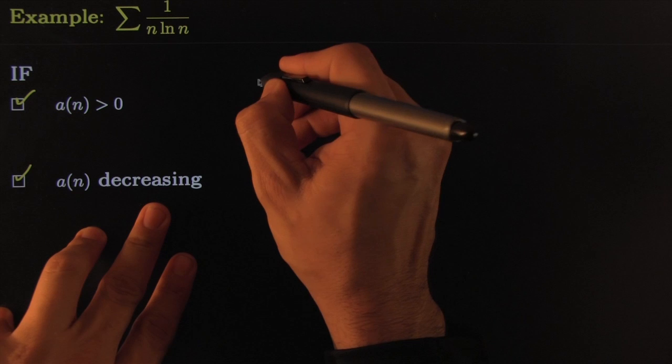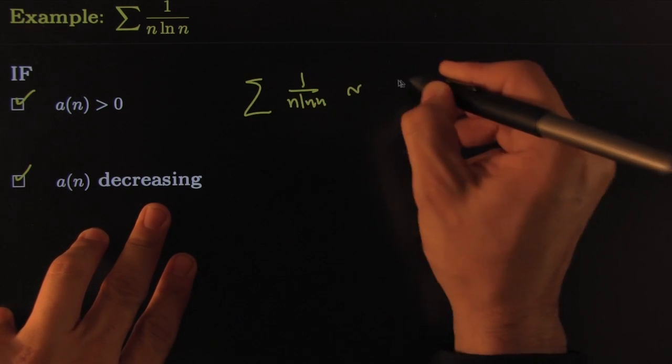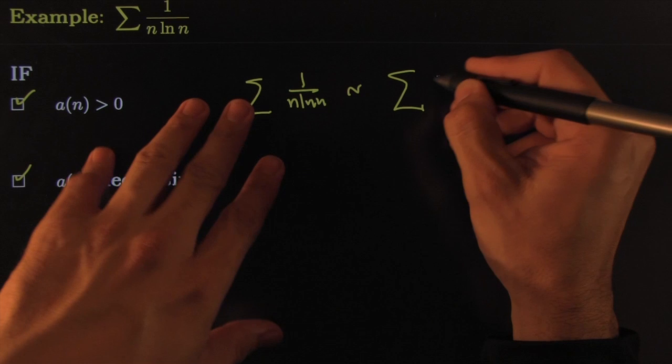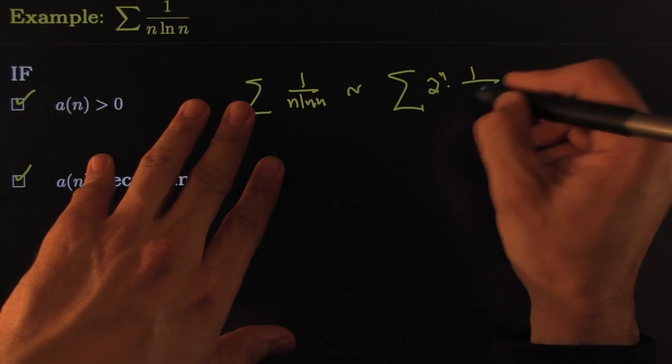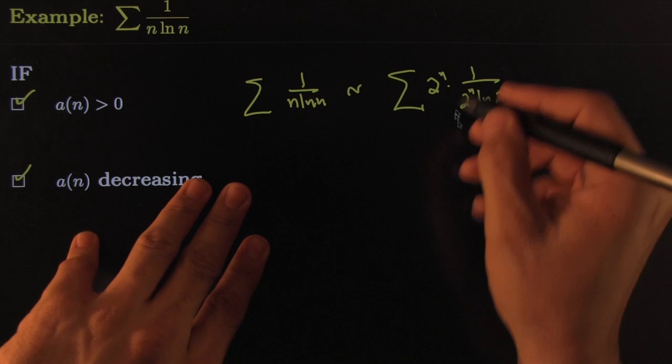To rock and roll, we would say that 1 over N LN of N behaves just like 2 to the N times 1 over 2 to the N LN 2 to the N. Let me say, whoa, what happened here?